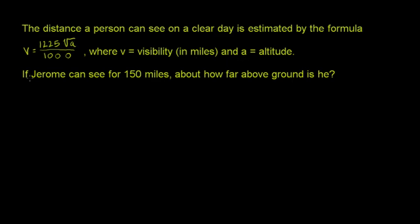Now they say if Jerome can see for 150 miles, so that's how far he can see, so that is the visibility, that is v. About how far above the ground is he? So they want to know what the altitude is, this is a, and this is what we don't know. We know that his visibility is 150 miles, we want to know what a is.